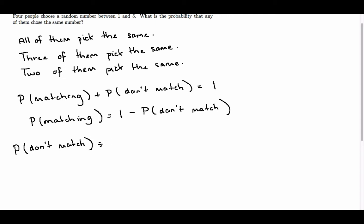If we consider the first person, they've got 5 numbers to pick from out of 5. So the second person now only has 4 numbers they can pick from, because one has already been taken, out of the 5 that are still there.